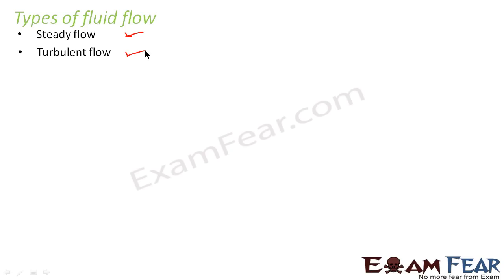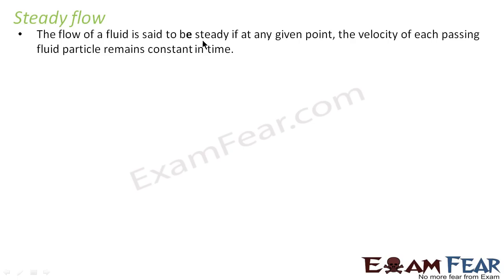So we will see each of the types in detail. This is a broad classification of moving fluids. One is steady flow, the other is turbulent flow. Now let us look at what is steady flow. The flow of a fluid is said to be steady if at any given point, the velocity of each passing fluid particle remains constant in time.